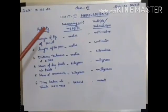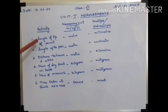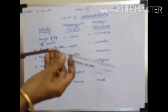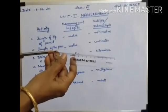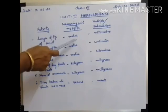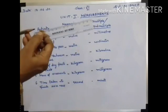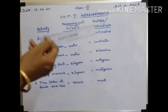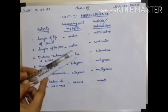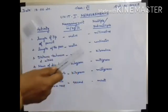Now, one activity: we can see quantities and express them with multiples and submultiples. First, the length of the tip of a pencil — the tip is very small, so we use the scale. The SI unit of length is meter, and since the tip is very small, the submultiple is millimeter. Second, the length of a pin: the SI unit is meter, and we can measure it in centimeters, so the submultiple is centimeter. Third, the distance between two cities — for example, from Coimbatore to Chennai. The SI unit for distance is meter, but since the distance is very large, we measure in kilometers.